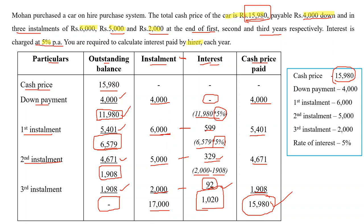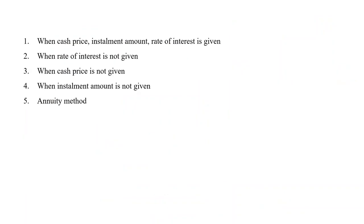In this video we have seen how to calculate interest when cash price, installment amount, and rate of interest are all given. The remaining methods — when rate of interest is not given, cash price is not given, installment amount is not given, and the annuity method — will be covered in the next video. The link is in the description box. Thank you for watching — I hope you found this video useful.